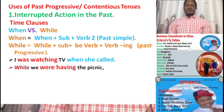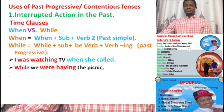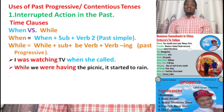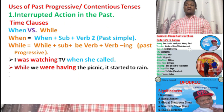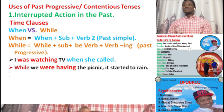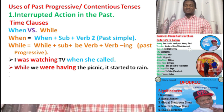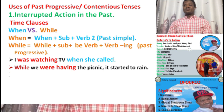Second example: 'While we were having the picnic' — that is the action that was going on in the past. 'It started to rain' — so 'it started to rain' is the interrupted action, and it is the main clause. The time clause is 'while we were having the picnic.' You're going to see a comma there. 'It started to rain' is the main clause. We are just focusing on the interrupted action in the past.